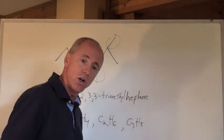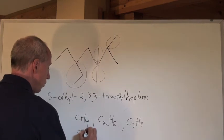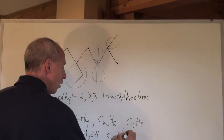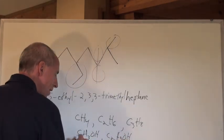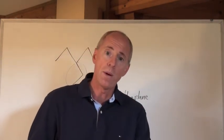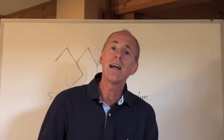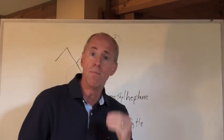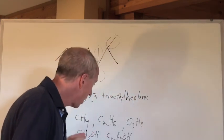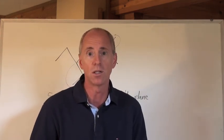Another homologous series could be alcohols: CH₃OH is methanol, C₂H₅OH is ethanol, and then you could have propan-1-ol and propan-2-ol. That's a series of alcohols — a homologous series because they all belong to the same family, listed in ascending order of carbons.